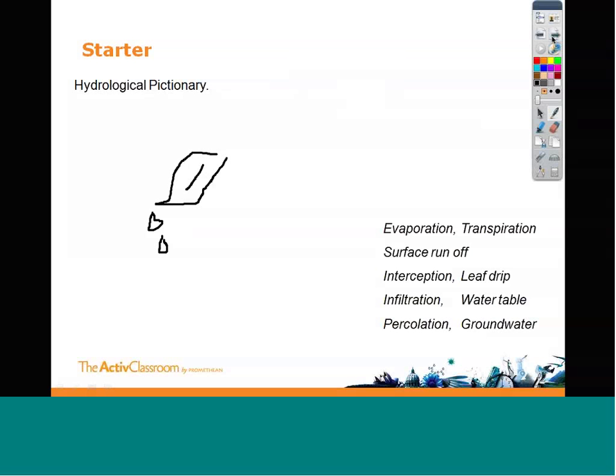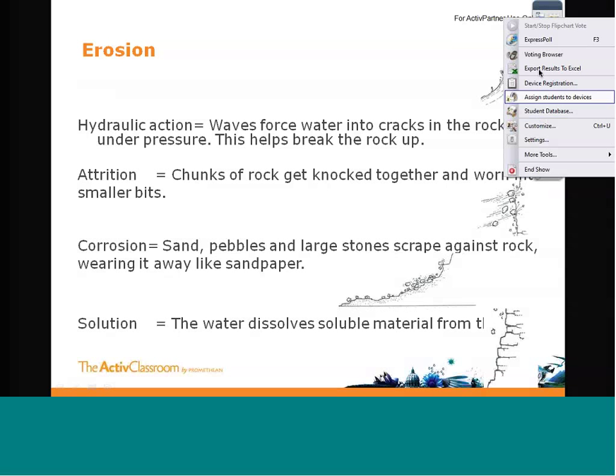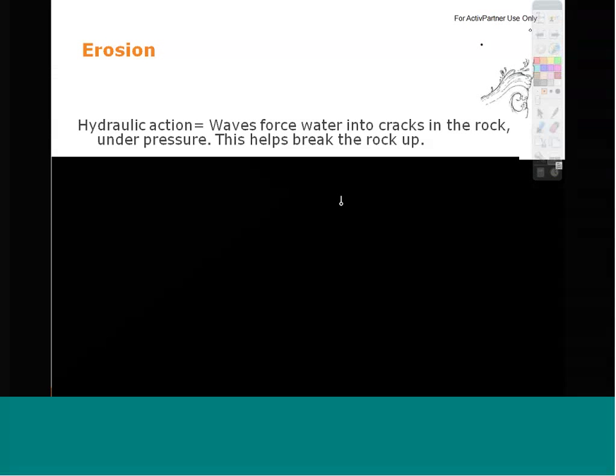Moving on to our next page, this page gives definitions of the four erosive processes you'd expect to find in a river. In its current format it gives all the details at once, which can be quite distracting. By simply adding the Revealer to my page, I'm able to reveal the details at my own pace, giving me control of what my students see. Not only will this impact how you deliver the lesson, but it will influence the learning as one thing is tackled at a time, ensuring students understand each stage.